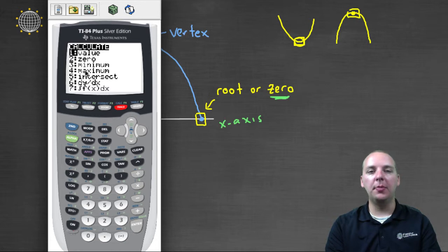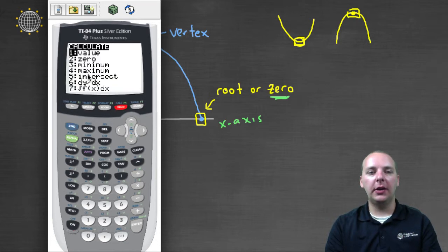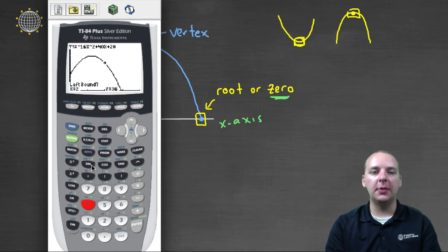Either the maximum, or the minimum. Now if you looked at our graph, did ours open upwards or downwards? Did we have a maximum, or a minimum? Well ours has a maximum, right here. So we'll go second calc, and choose number four for our example.